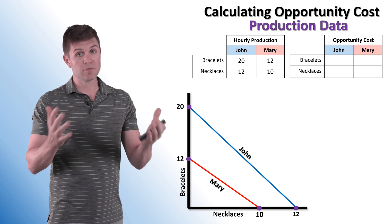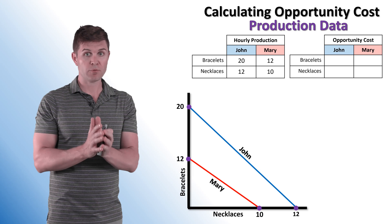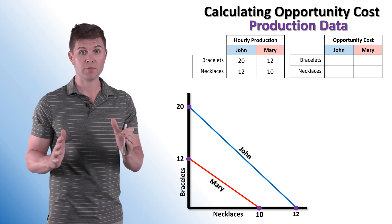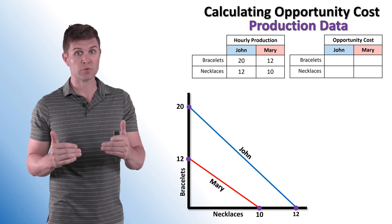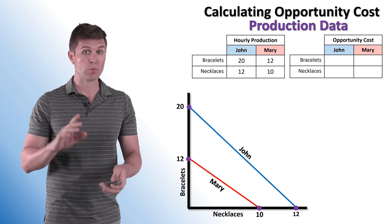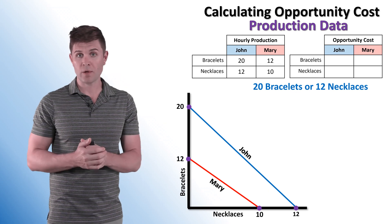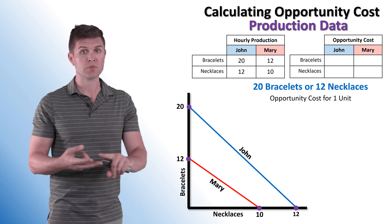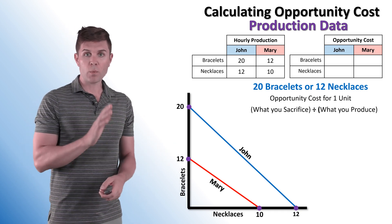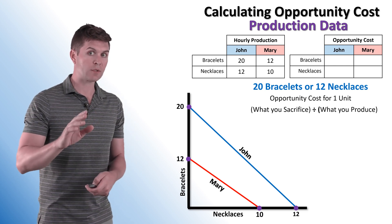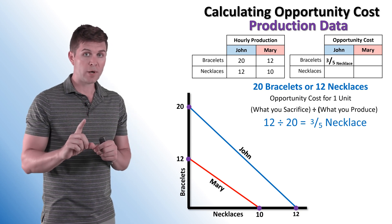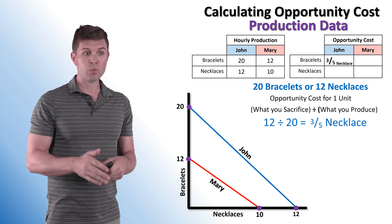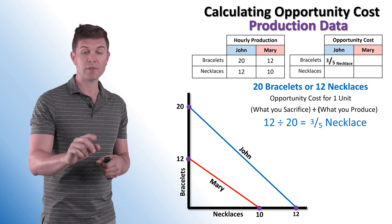When calculating opportunity costs given production data, you have to look at what information you're given. In this case, we're given hourly production — how many bracelets or necklaces John and Mary can produce in a given period of time. The formula is: what we sacrifice divided by what we produce. To find the opportunity cost of producing one bracelet, we take the 12 necklaces we're sacrificing divided by the 20 bracelets we're producing. 12 divided by 20 equals three-fifths of a necklace. So the opportunity cost of producing one bracelet is three-fifths of a necklace.